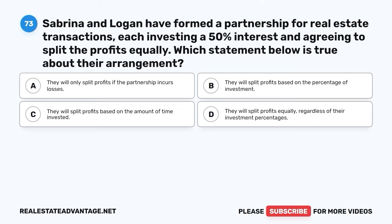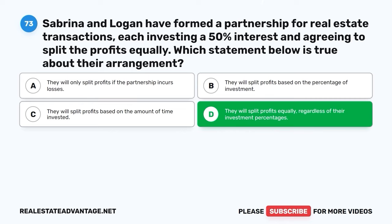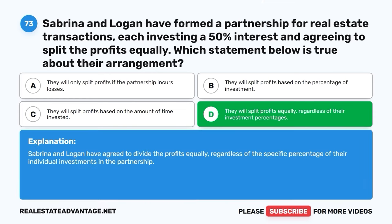Question 73. Sabrina and Logan have formed a partnership for real estate transactions, each investing a 50% interest and agreeing to split the profits equally. Which statement below is true about their arrangement? A. They will only split profits if the partnership incurs losses. B. They will split profits based on the percentage of investment. C. They will split profits based on the amount of time invested. D. They will split profits equally regardless of their investment percentages. The correct answer is D: They will split profits equally regardless of their investment percentages. Sabrina and Logan have agreed to divide the profits equally regardless of the specific percentage of their individual investments in the partnership.